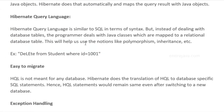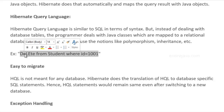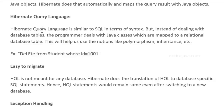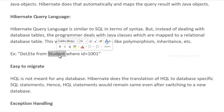HQL remains common for all databases because Hibernate takes care of converting it into the database-specific SQL statement. With Hibernate you interact with Java objects. For example, in this statement where we're trying to delete an entry from student, 'student' is actually the name of the class, not the name of the table in the relational database. That's the beauty Hibernate offers — Java developers feel more comfortable interacting with Java objects rather than relational database tables.